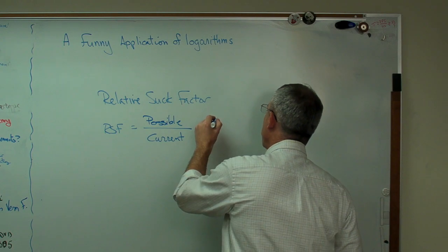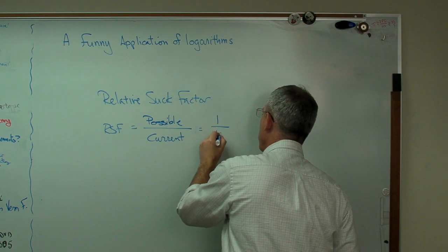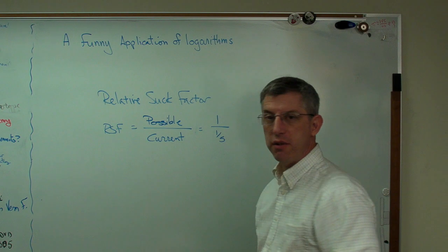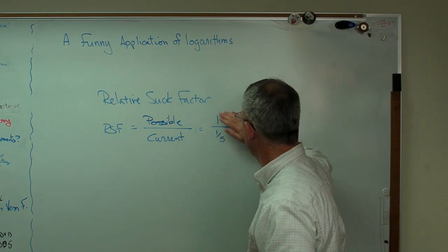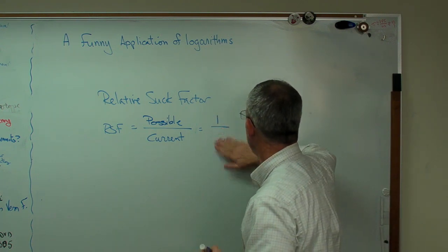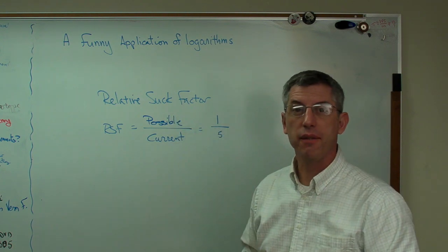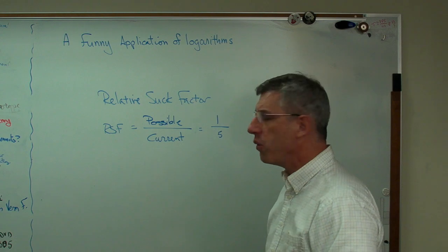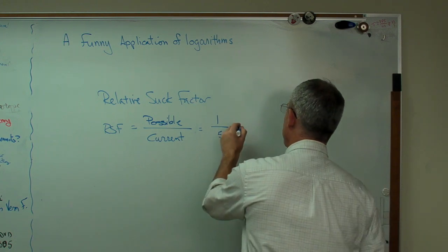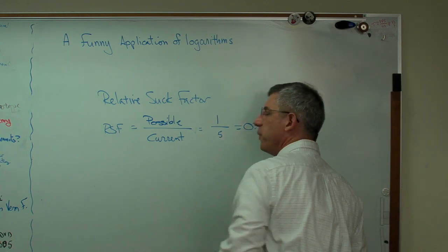Well, if that happens, then you're going to wind up with one over five. So your relative suck factor, one over five, because this is now five times worse than that, you're going to wind up with a relative suck factor of 0.2.